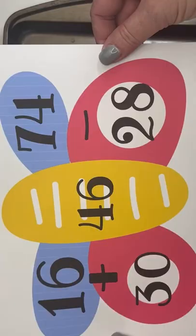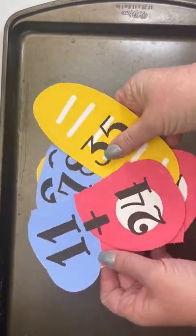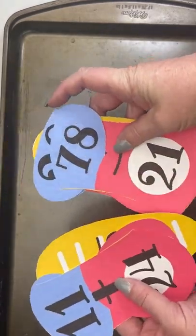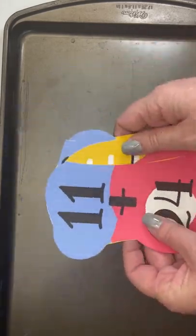We're going to make our activity with these butterfly addition and subtraction puzzles. This particular set is available in my Teachers Pay Teachers store and has both single digit and double digit problems. The butterfly's abdomen has the solution to both an addition and a subtraction problem. Our job is to find all three pieces that finish the butterfly.